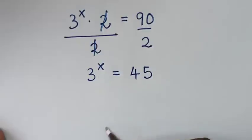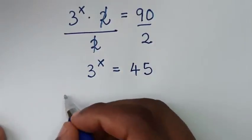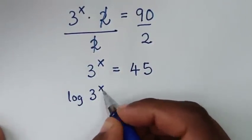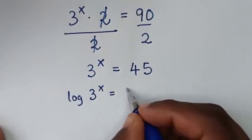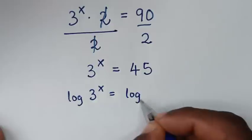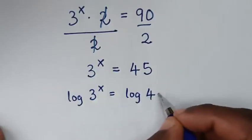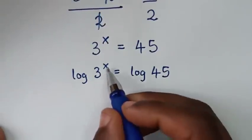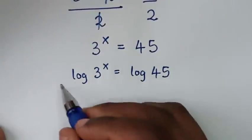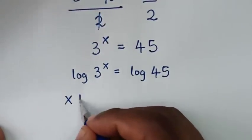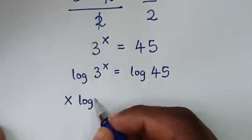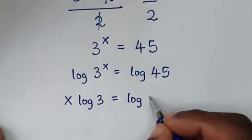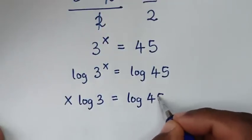We will apply log on both sides. So it will be log of 3 power of x is equal to log of 45. Then this power of x will move to the base, so it will be x log of 3 is equal to log of 45.